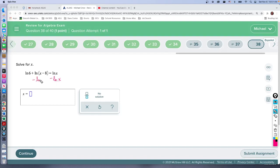So we get zero equals the natural log of six plus the natural log of (x minus eight) minus the natural log of x. I'll do it that way.